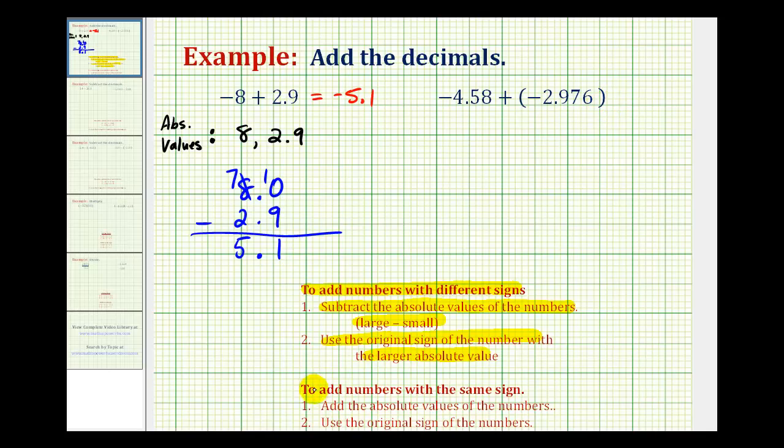The formal rules say to add numbers with the same sign. Now we're going to add the absolute values of the numbers, but then we want to use the original sign of the numbers.